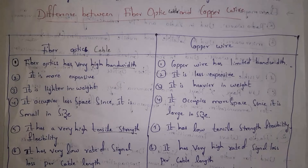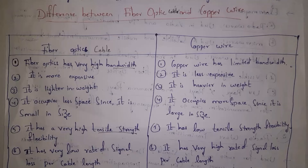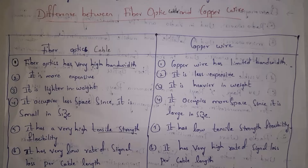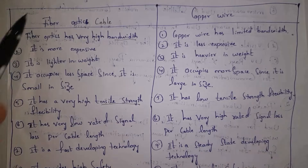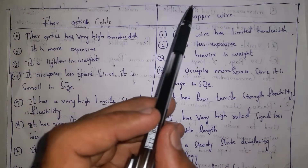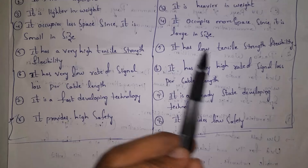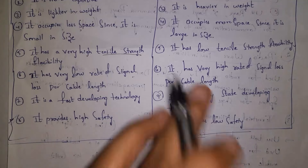Now the difference between fiber optic cable and copper wire. First, fiber optic has very high bandwidth — meaning a high amount of data can be transferred — while copper wire has limited bandwidth. Fiber optic cables are more expensive; copper wires are less expensive. Fiber optic cables are light in weight and occupy less space; copper wires are heavy and occupy more space. Fiber optic has high strength; copper wire has low strength. Even if cable length is very high, there is no signal loss in fiber optic, whereas copper wire can experience signal loss over long lengths.